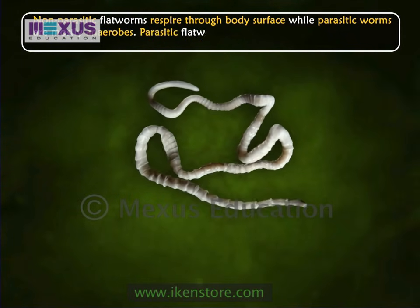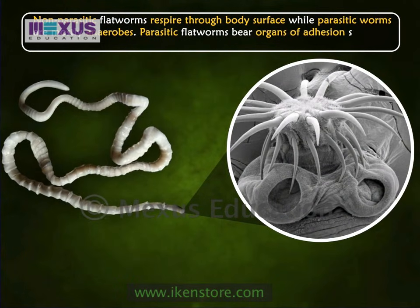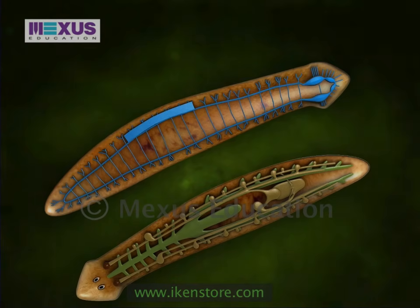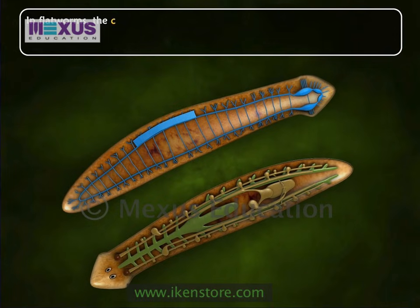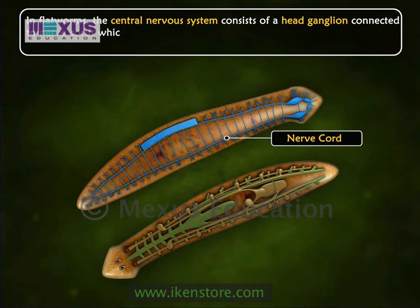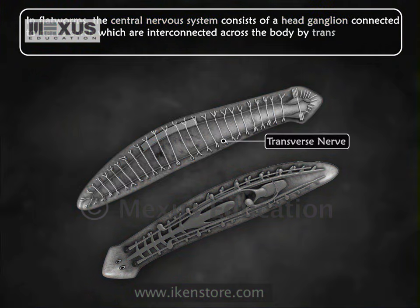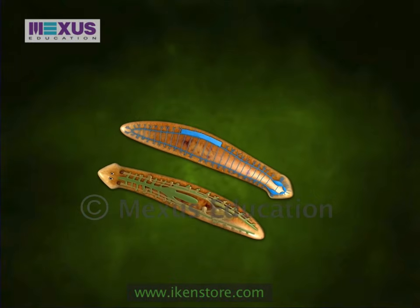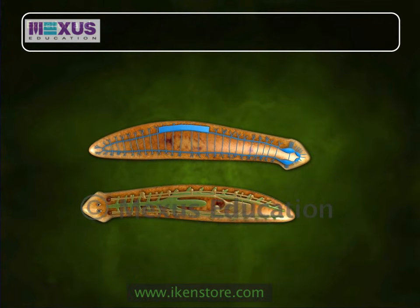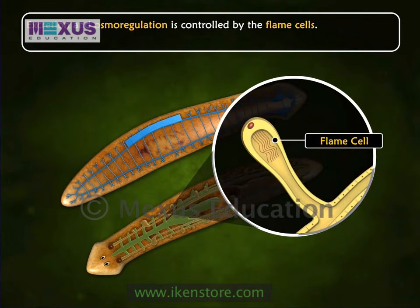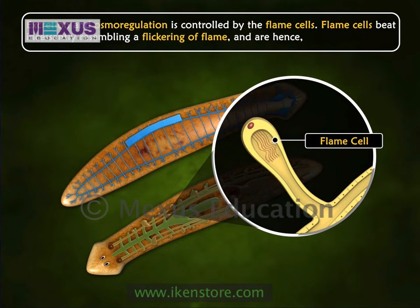Parasitic flatworms bear organs of adhesion such as hooks, suckers, and spines. In flatworms, the central nervous system consists of a head ganglion connected to nerve cords, which are interconnected across the body by transverse nerve connections. Excretion and osmoregulation are controlled by flame cells, which beat incessantly, resembling a flickering flame.